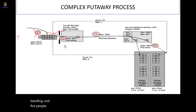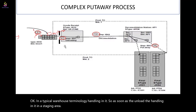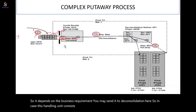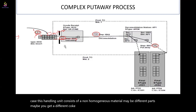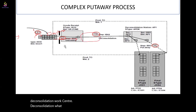As soon as they unload the handling unit into the staging area, depending on the business requirement, you may send it to deconsolidation. For example, if a single handling unit contains non-homogeneous material — say 50% Coke and 50% Pepsi — the system needs to know it should move to the deconsolidation work center.